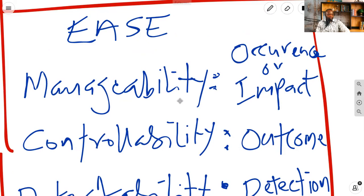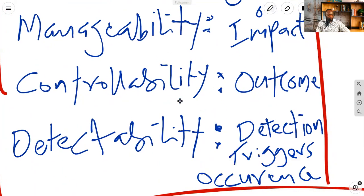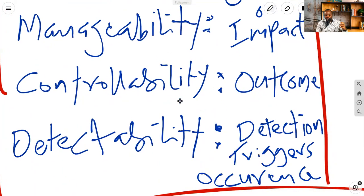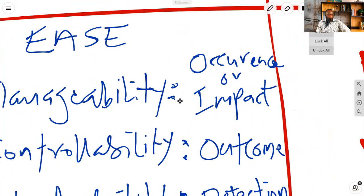The next one here is controllability. Again, think about ease to control the risk's outcome. So when we talk about manageability, we're talking about two things here: occurrence or impact. You see that? This could be linked to a mitigate strategy.